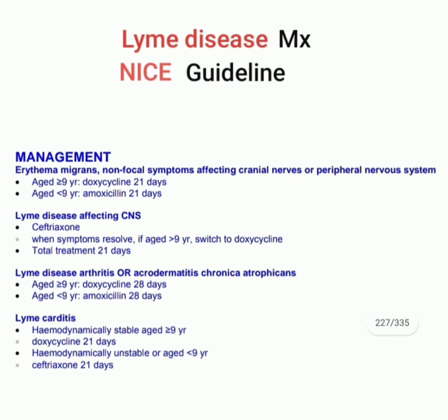Fourth: if Lyme disease with carditis, we divide into two groups — hemodynamically stable and unstable. If hemodynamically stable and age nine years or more, treatment is doxycycline 21 days. If hemodynamically unstable or age less than nine years, treatment is ceftriaxone 21 days. This is all about Lyme disease management according to NICE guidelines.